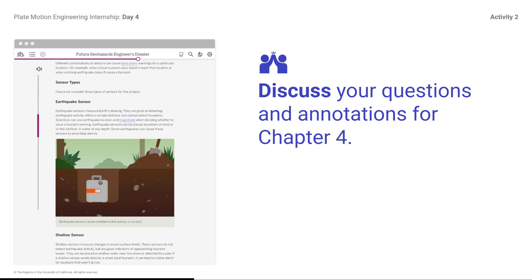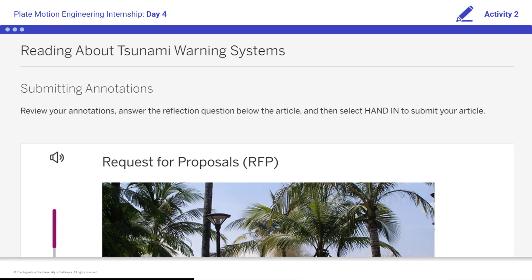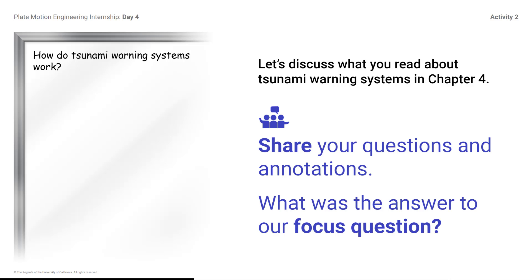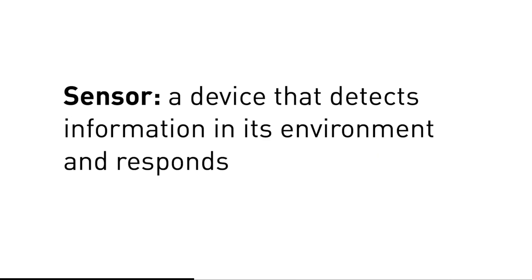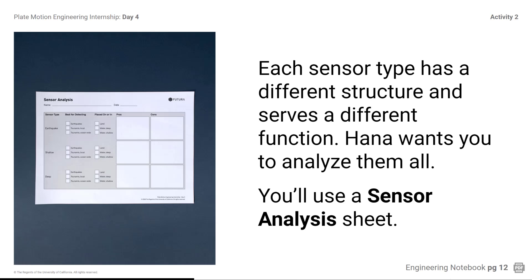Discuss your questions and annotations for Chapter 4. If you are submitting your annotations, do so now. Let's discuss what you read about Tsunami Warning Systems. Share your questions and annotations. What was the answer to our focus question — How do Tsunami Warning Systems work? Tsunami Warning Systems use several combinations of sensors to detect changes in the environment, like earthquakes, and changes in the ocean water level or pressure. The sensors send data to scientists who decide if a tsunami warning should be issued. There needs to be enough good data to send a warning to help protect people. A sensor is a device that detects information in its environment and responds. Tsunami Warning Systems can be quite complicated, but the major components are the sensors that detect earthquakes and tsunamis and respond by sending their data to scientists for interpretation. Each sensor type has a different structure and serves a different function.